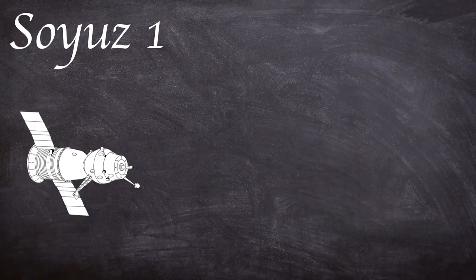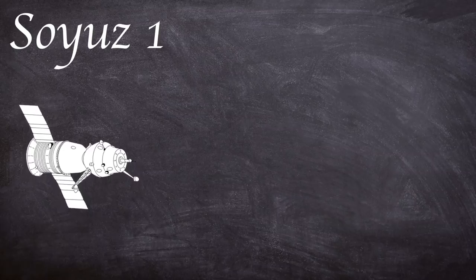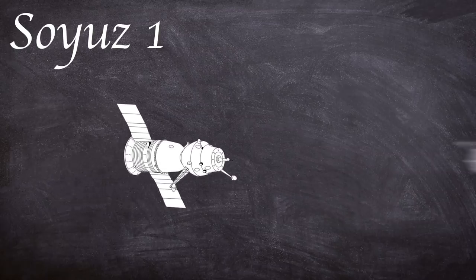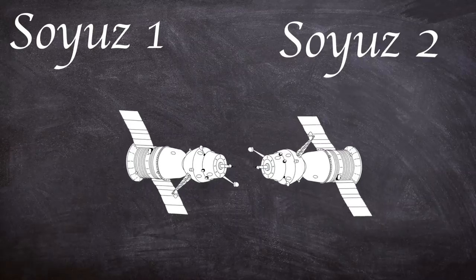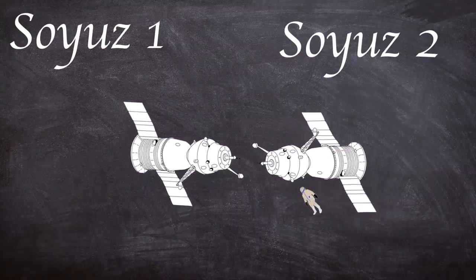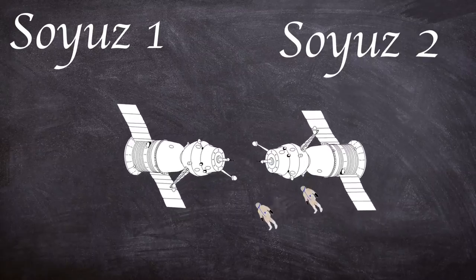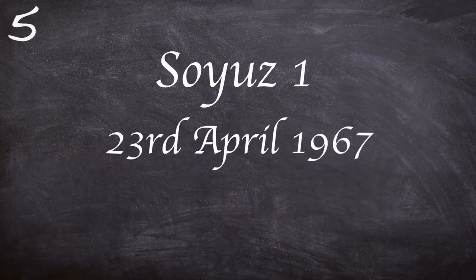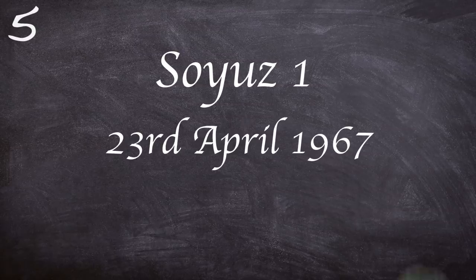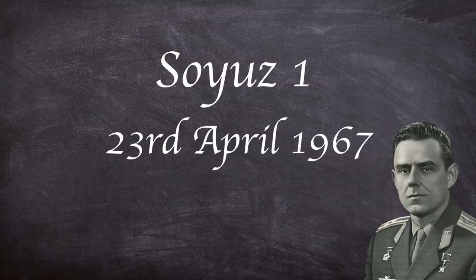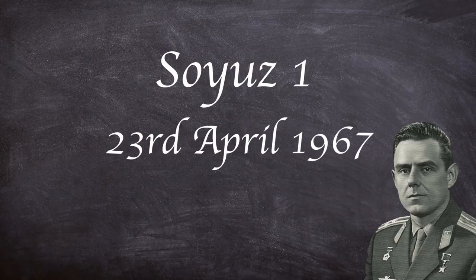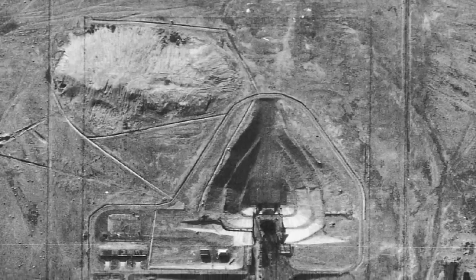This leads us to the Soyuz 1 mission. The plan was for the craft to launch and be followed a day later by a three-man crewed Soyuz 2. Upon meeting in orbit, two of the cosmonauts would spacewalk from Soyuz 2 to Soyuz 1. The launch date was set for April 23, 1967, and would be crewed by 40-year-old Voskhod 1 veteran and lunar training group commander Vladimir Mikhailovich Komarov.